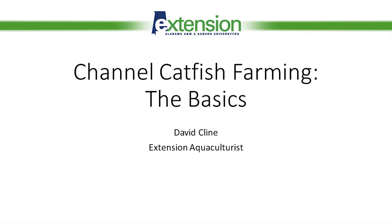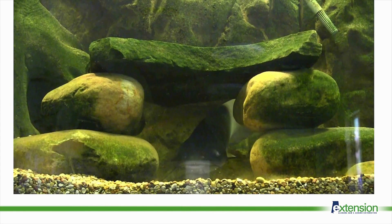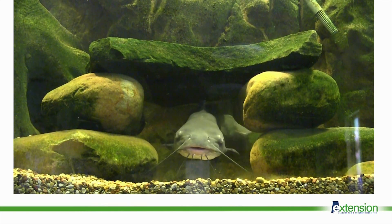The production of any aquaculture crop involves multiple steps, many of which are consistent among different species. These important steps involve all parts of the lifecycle, including broodstock selection, controlling reproduction, egg care and management, larval rearing, feeding, maintaining water quality, harvesting, processing, and transportation. Let's use the channel catfish as an example to illustrate some of these steps.